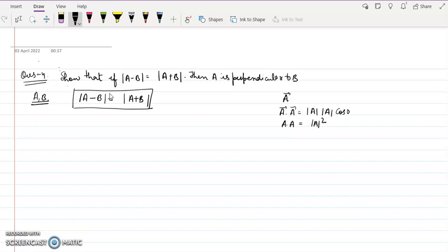If this is given, then I can square both sides and I can get a minus b square equals to a plus b whole square. If I apply this property that a dot a is mod a square, then a minus b will be a minus b dot with a minus b. These are all vectors, so I should put arrow above all. So a plus b dot with a vector plus b vector.